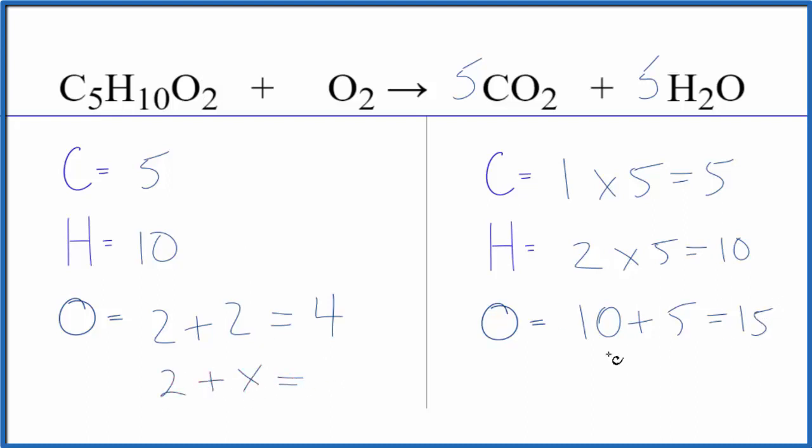So two plus thirteen, right? That would equal fifteen. So we need to have a thirteen in front of the O2, but remember this is O2, so it's going to be half of that. We're going to call this thirteen over two.